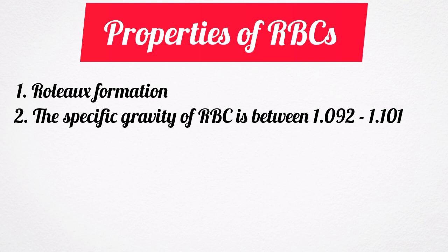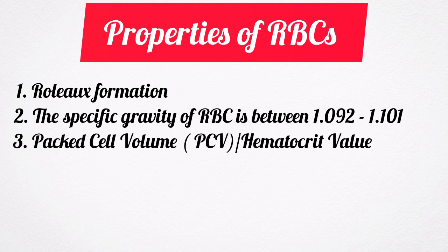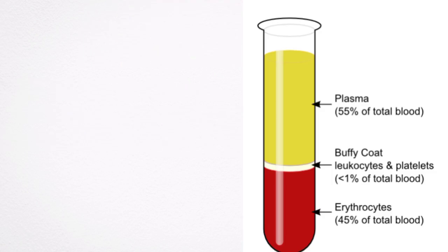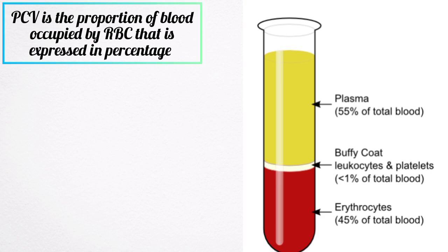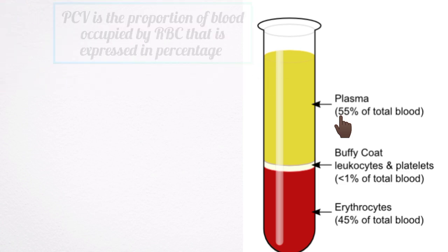Another property of red blood cells is what we call the packed cell volume. Packed cell volume is the proportion of blood occupied by red blood cells, expressed in percentage. It is also called the hematocrit value. Usually it is 45% of the blood, and plasma volume is usually 55%.